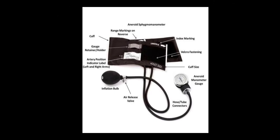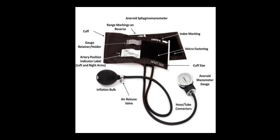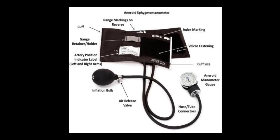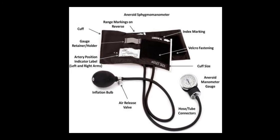The next is the BP instrument, also called a sphygmomanometer. It is of two types: one is aneroid and another is mercury. Here I will first show the aneroid sphygmomanometer. You can see the labeled diagram with the tubing, inflation bulb, air release valve, hose or tube connectors, cuff, and the aneroid manometer gauge which shows the reading.